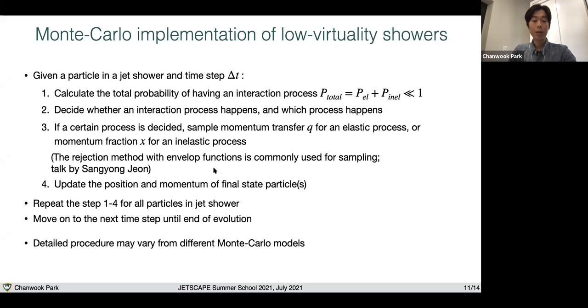Now we are done with this one particle. Then we just pick another particle in the list and repeat the step from one to four until all particles are processed. Then we move on to the next time step, because this is time ordered shower. You keep doing this until the end of the evolution. Please note that the details of this Monte Carlo procedure could be different depending on the nature of the energy loss models. However, this is very typical way of implementing the Monte Carlo method for time ordered shower.